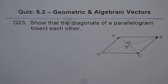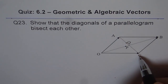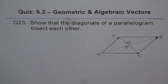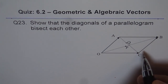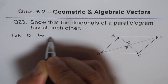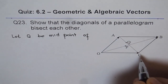That is what we need to prove. The approach we have adopted here is: let them not bisect. Let us say that this is not the midpoint of AC. Let us say the midpoint of AC is Q and the midpoint of OB is P. So if the midpoints are different, the diagonals will definitely intersect, but we are saying that they do not bisect. So our assumption here is: let Q be the midpoint of AC.